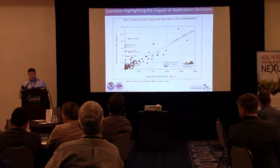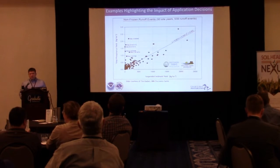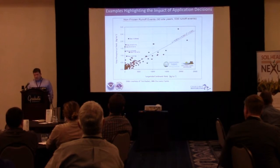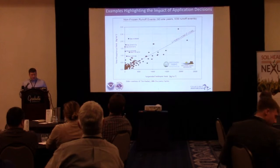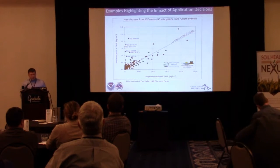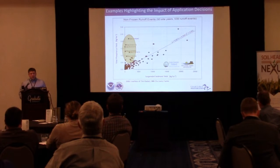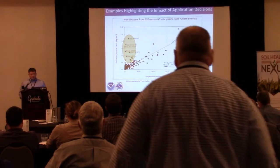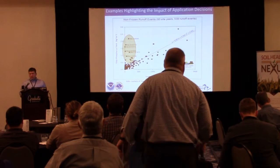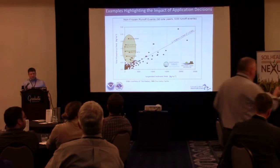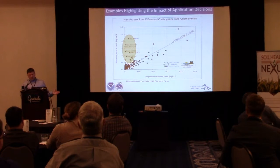Here's an example of where field management decisions are the key player. This is sediment yield against total phosphorus for non-frozen ground events. You'd see a relationship — as you lose soil you lose some of that particulate phosphorus — but there's a cluster over here that doesn't follow that relationship. These are events where a nutrient application occurred shortly before a runoff event. These are what the runoff risk tool is trying to help avoid. The rest of the Four R's are going to try to help the rest of the curve.